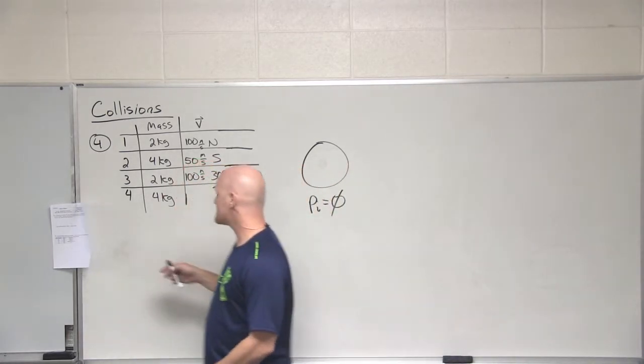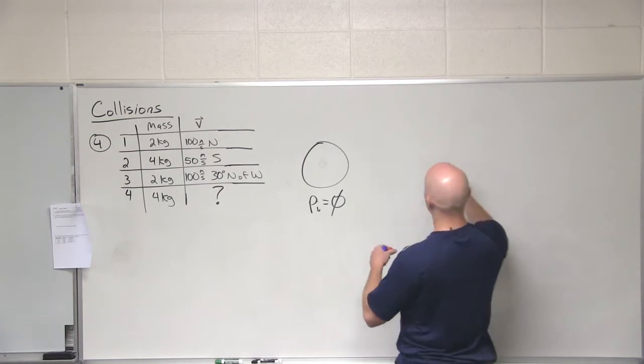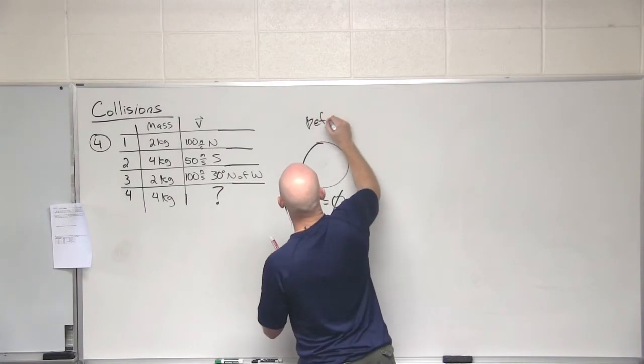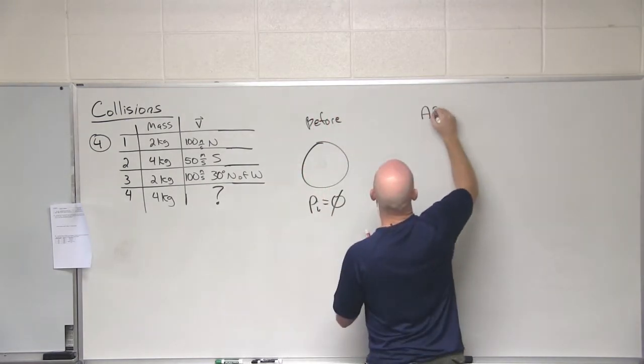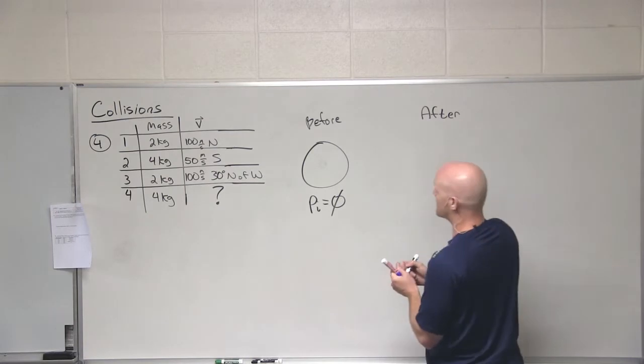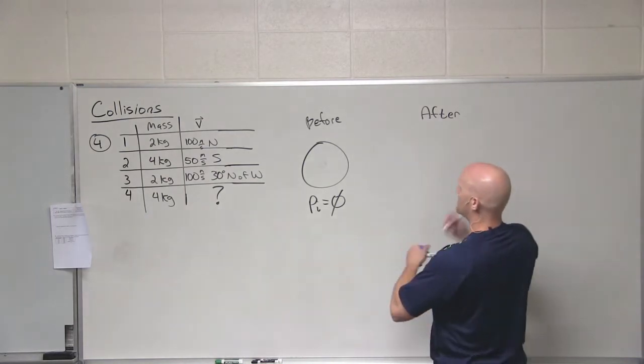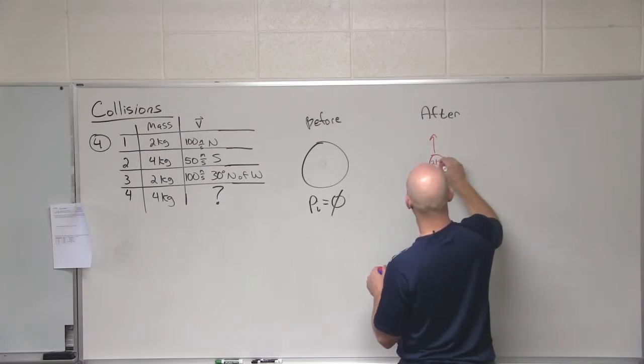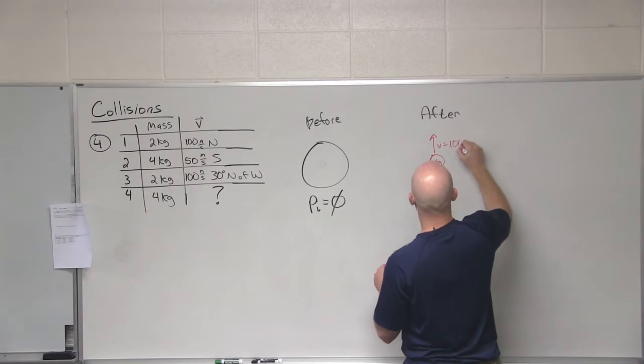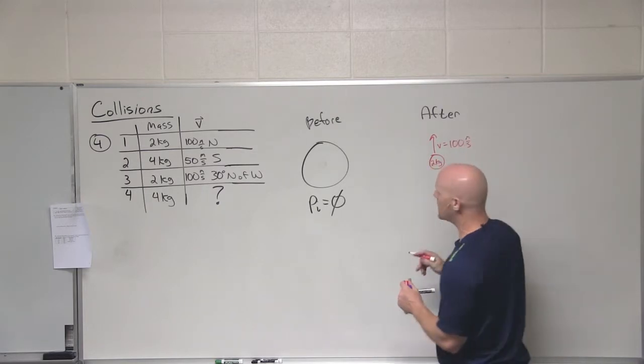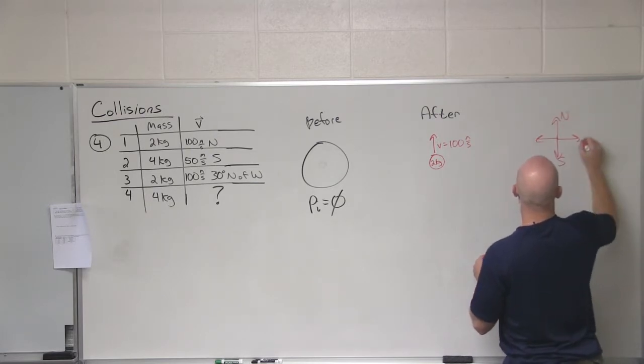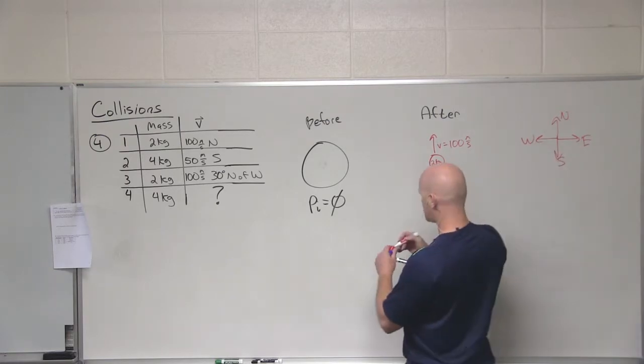All right. So in this case, let's map out these fragments here. So we've got at the, this is the before picture, by the way. Now let's look at the after. Try and do these in different colors here. So we've got one mass moving, a two kilogram mass, moving with a velocity of a hundred meters per second directly north. So I'll put up as north. So we'll have north, south, east, west.